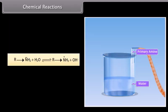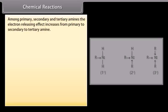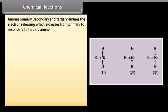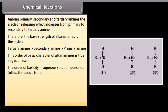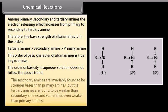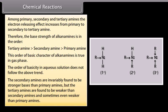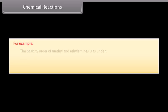Among primary, secondary, and tertiary amines, the electron-releasing effect increases from primary to secondary to tertiary amine. Therefore, base strength in the gas phase follows: tertiary > secondary > primary amine. However, in aqueous solution, secondary amines are invariably stronger bases than primary amines, but tertiary amines are found to be weaker than secondary and sometimes even weaker than primary amines.